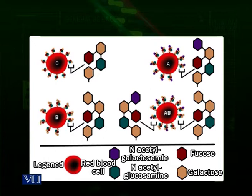Those who have blood group A have antigen A present on the surface of their blood cells, as seen in the top right of the diagram. Those who have only antigen B on their blood cell surface have blood group B. And those who have both antigen A and antigen B present on the surface of their red blood cells have blood group AB.